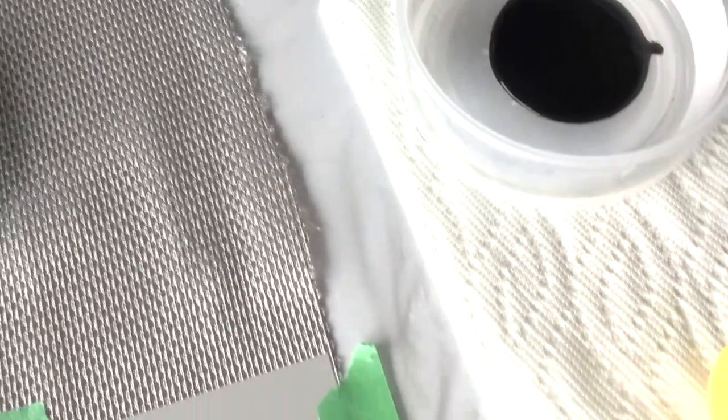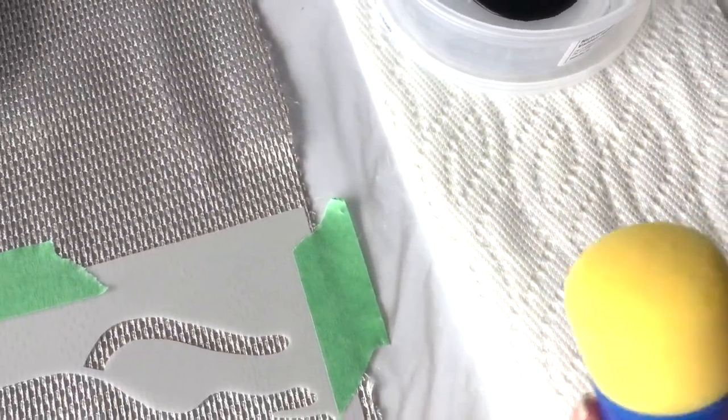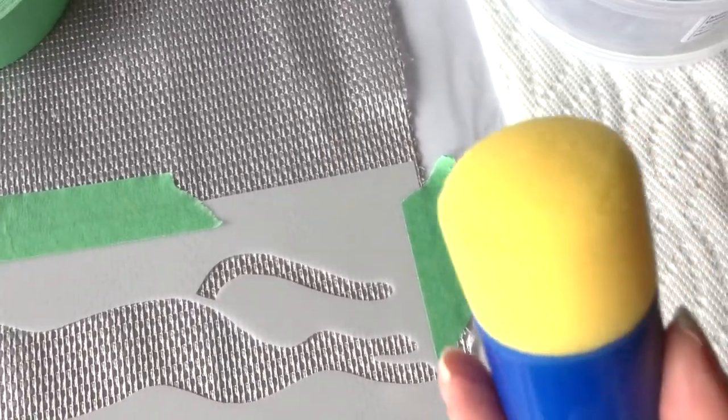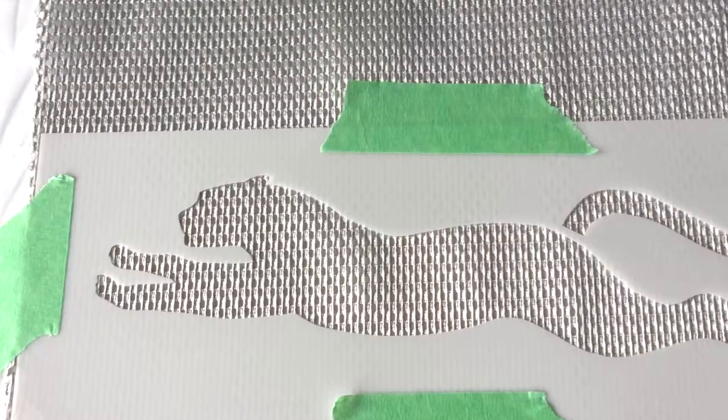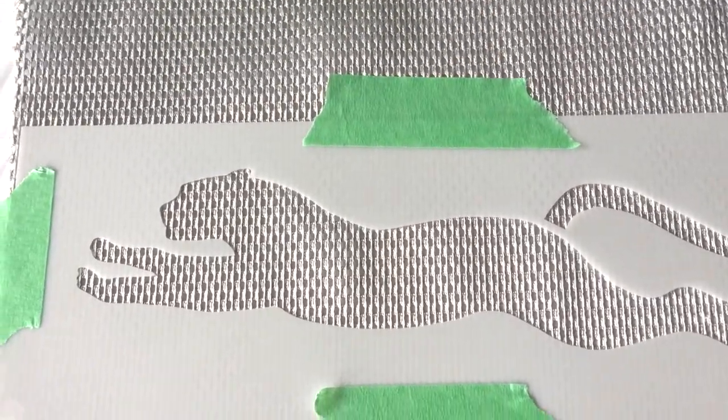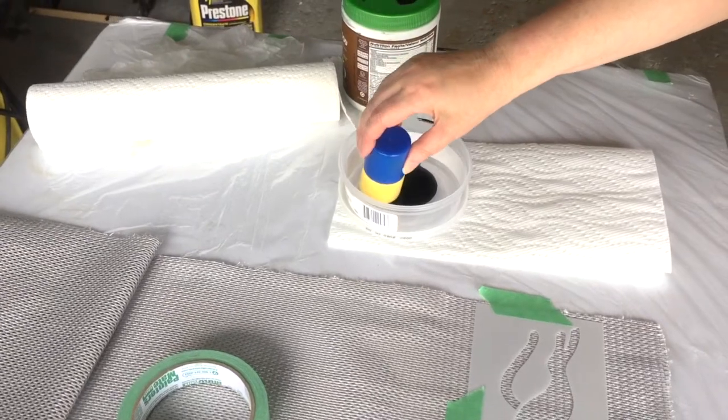I'm going to be dipping it in the paint and then dabbing it off on some paper towels here. You want to have a very, very dry applicator, and then I'm going to be pouncing onto the stencil. So let's see what happens.